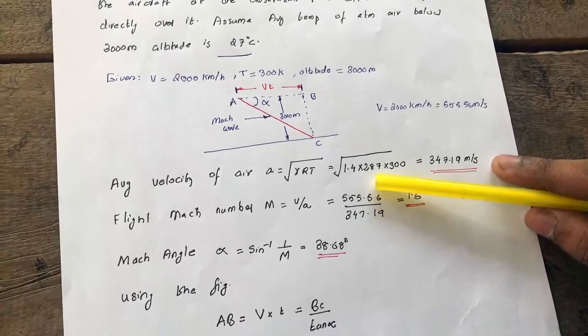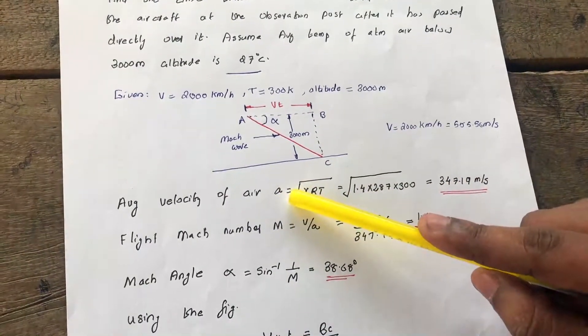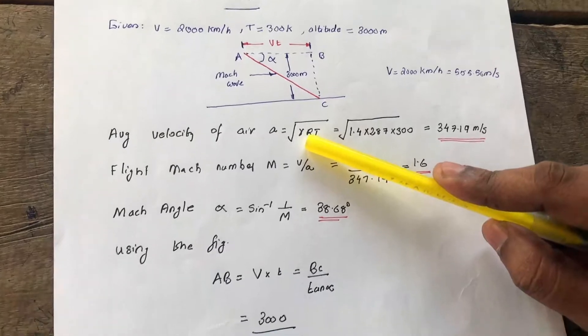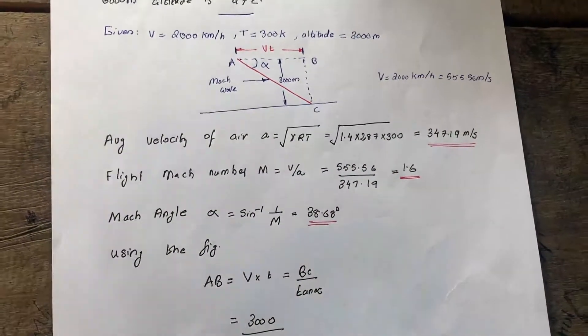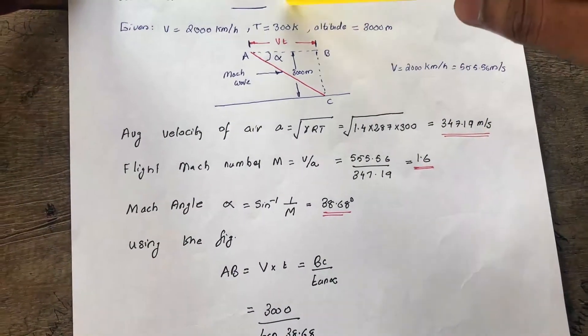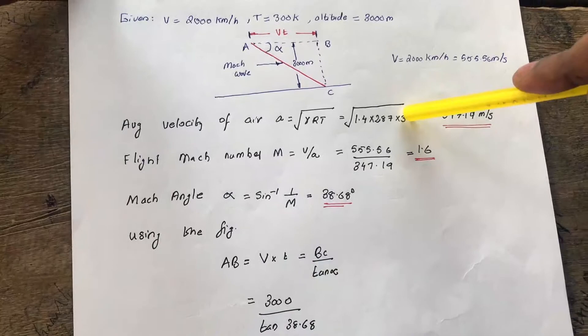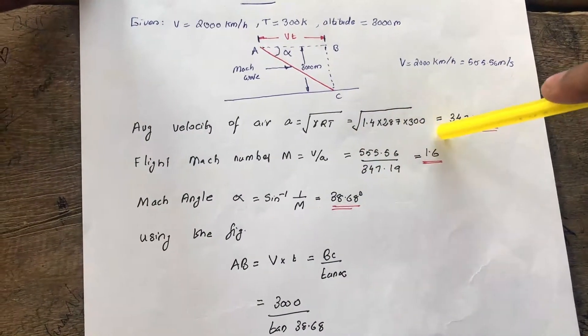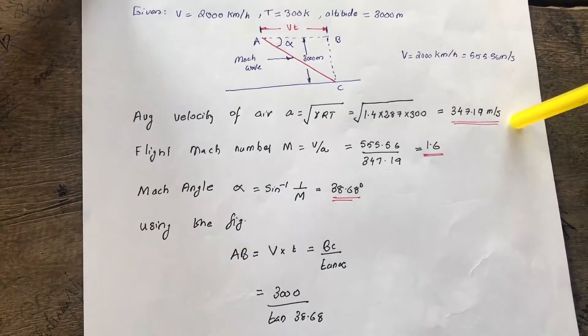We know the velocity of sound in air: a equals the square root of lambda R T. That is our basic equation. We can find it as 347.19 meters per second. We are substituting these values - 300, 37 degrees Celsius. We can convert it into Kelvin. That is the standard procedure. Hence, we find it as 347.19 meters per second.